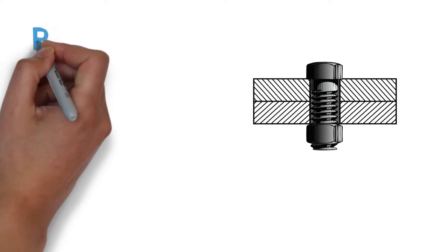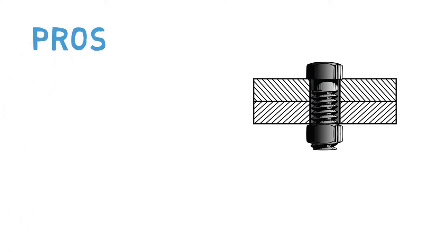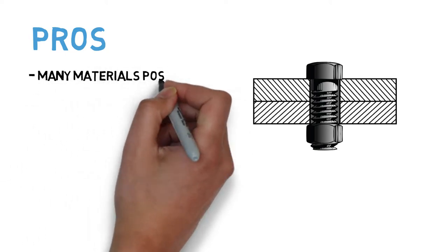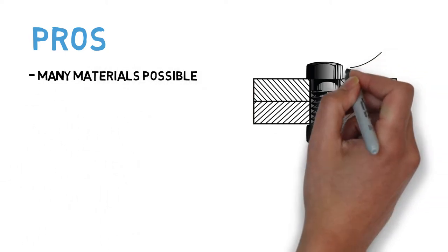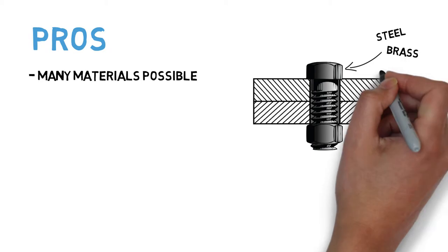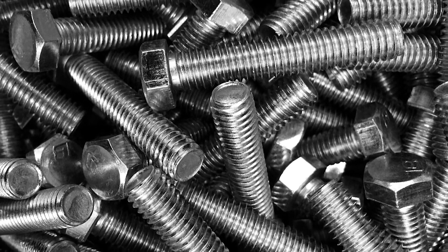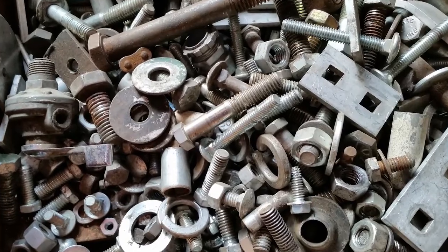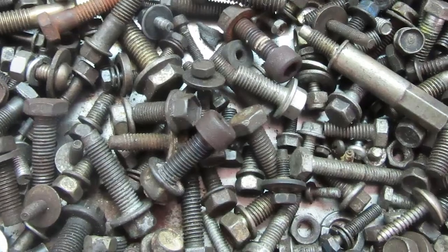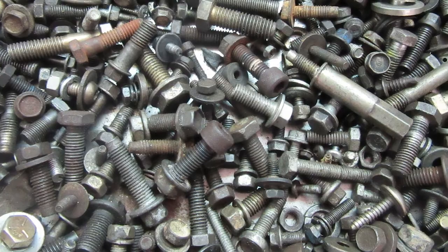There are a number of pros and cons to threaded fasteners to consider when designing a joint. On the pro side, threaded fasteners can be made out of a wide range of materials, including both high strength and low strength metal alloys. This provides a designer with a wide range of options in selecting the best performing fastener for the job, and to tailor fasteners for different roles, such as tension or shear dominated joints.